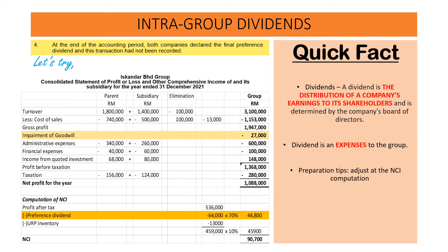In terms of the preparation of the consolidated statement of profit and loss and other comprehensive income, we have to adjust the non-controlling interest. For the fourth additional information, at the end of the accounting period, both companies declared the final preference dividend and these transactions had not been recorded.